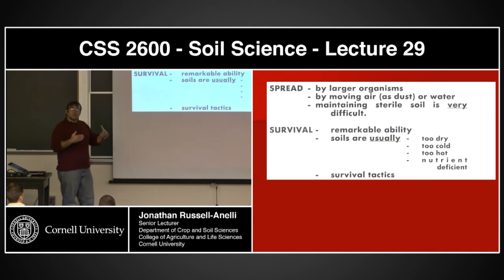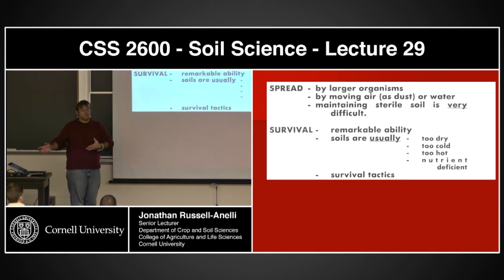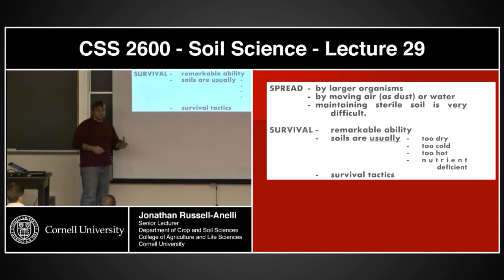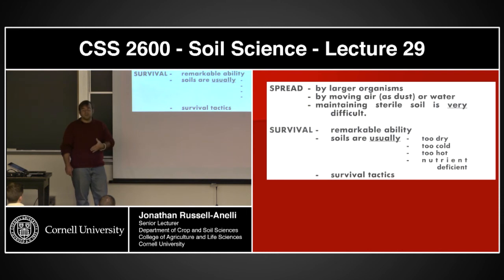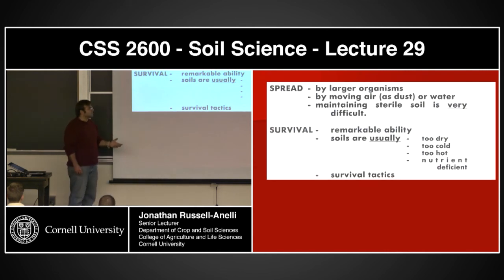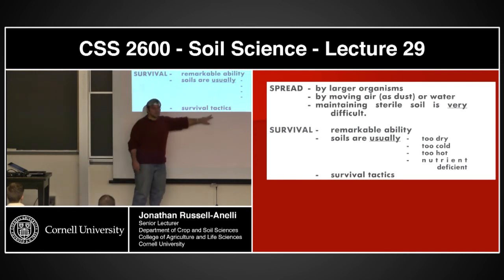What's controlling their spread? A lot of these organisms are moved around by things like us — we eat something, we have E. coli, we go to the bathroom, and that material comes out wherever we've moved to. They're also moving on our skin, by air, or on dust particles that get picked up and carried. Because of this it is extremely difficult to maintain a sterile system. Even in greenhouse conditions with careful management, you still run into contamination issues. As for survival: soils are usually too dry, too moist, too cold, or too hot, with nutrition deficits — so bacteria have remarkable survival tactics.